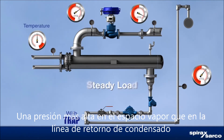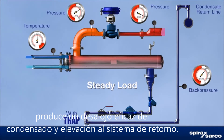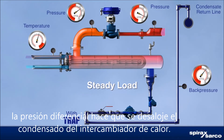Higher pressure in the steam space than in the condensate recovery line produces effective condensate removal and lift to the return system. Under a steady high load, differential pressure removes the condensate from the heat exchanger.